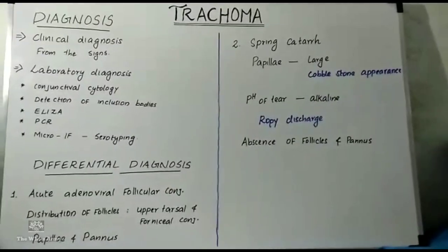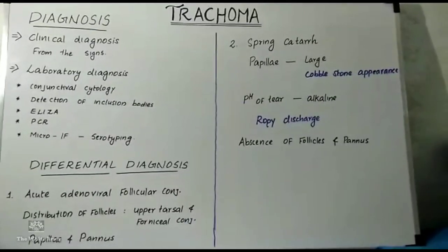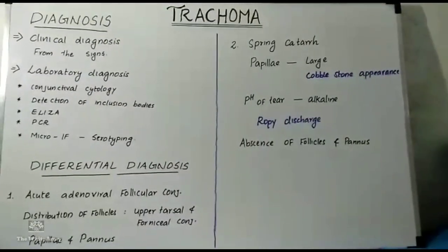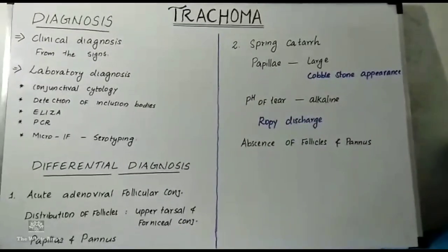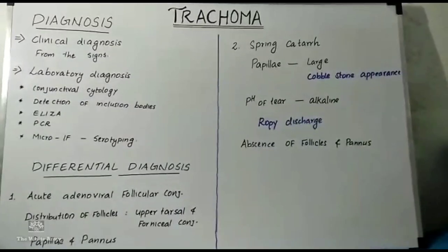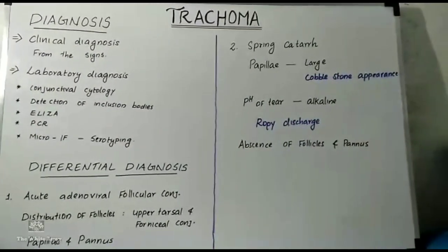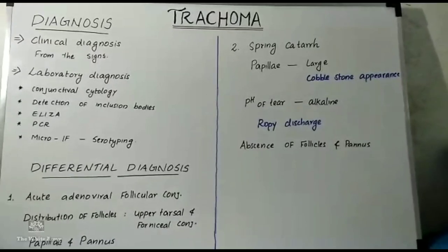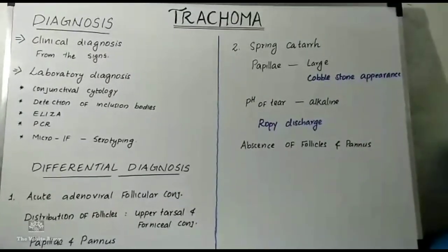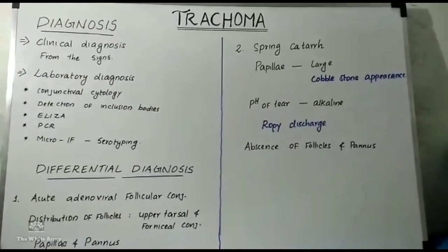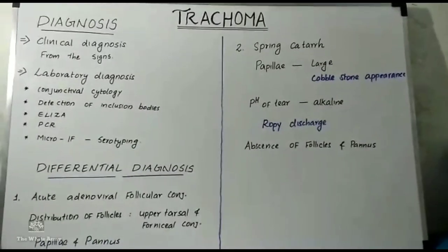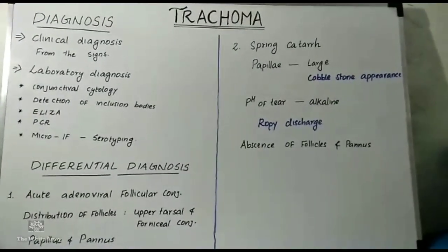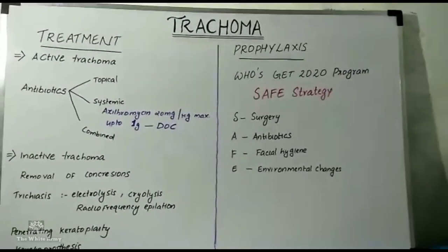For differential diagnosis, the first is acute adenoviral follicular conjunctivitis. In trachoma, follicles are more distributed in the upper tarsal and fornicial conjunctiva, with presence of papillae and pannus, which help differentiate it. The next differential is spring catarrh, in which the papillae are large with a characteristic cobblestone appearance. The pH of tears is alkaline in spring catarrh, while in trachoma it is acidic. The characteristic rope discharge and absence of follicles and pannus help differentiate spring catarrh from trachoma.